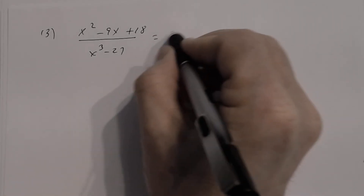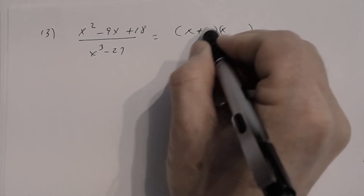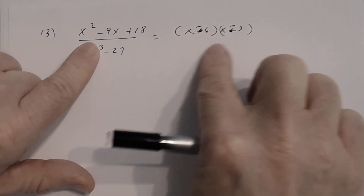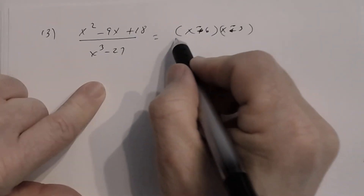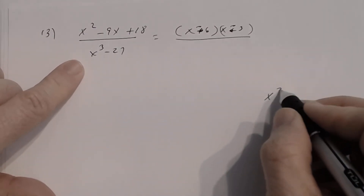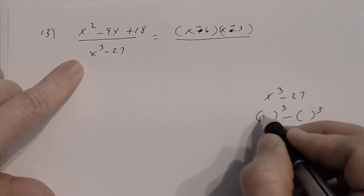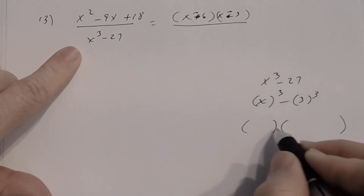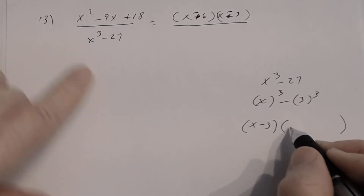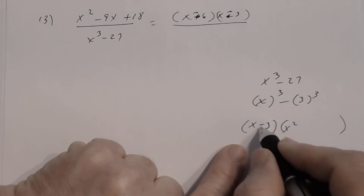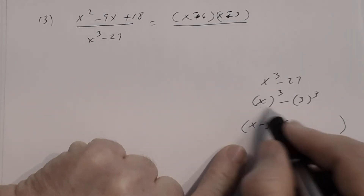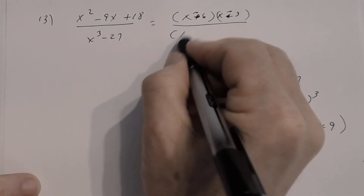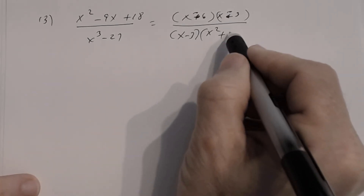Factor the numerator: x·x, try −3 and −6: −3x − 6x = −9x. ✓ Numerator: (x − 3)(x − 6). The denominator is the difference of two cubes (x and 3): factor as (x − 3)(x² + 3x + 9). Remember, the trinomial from a sum or difference of cubes cannot be factored further.